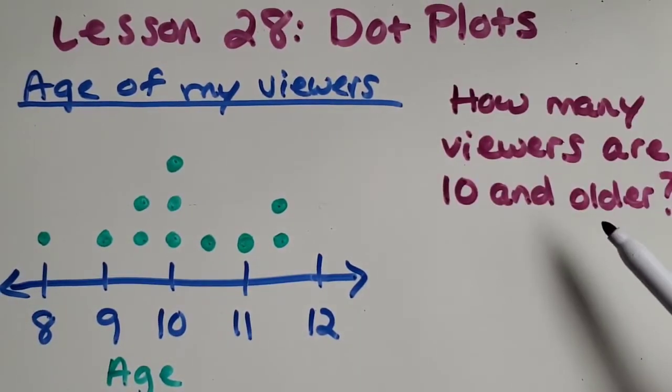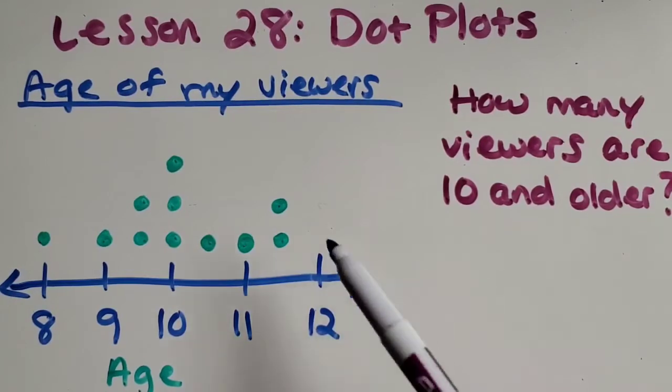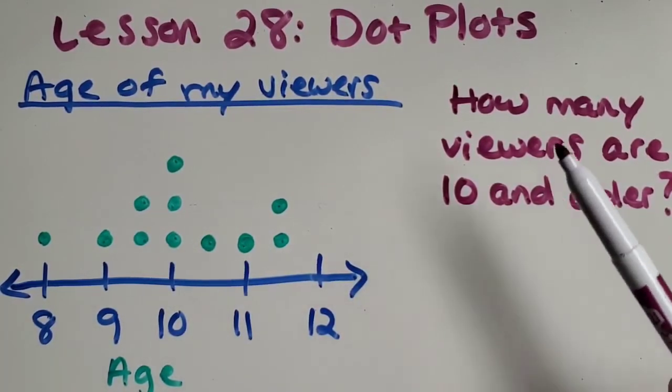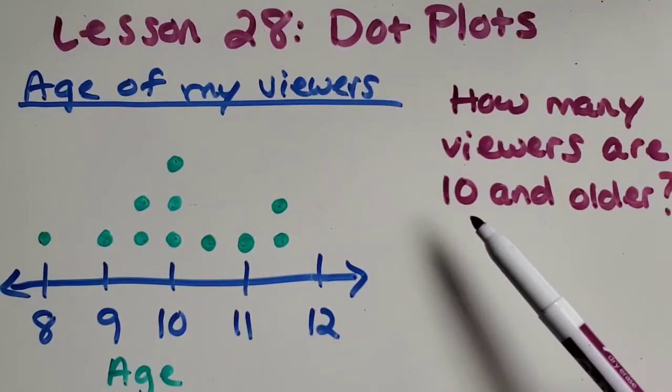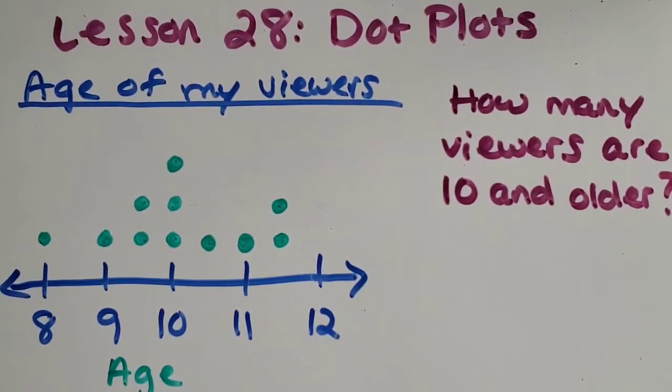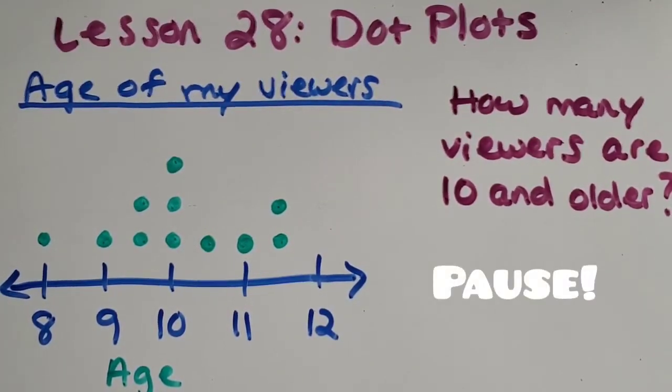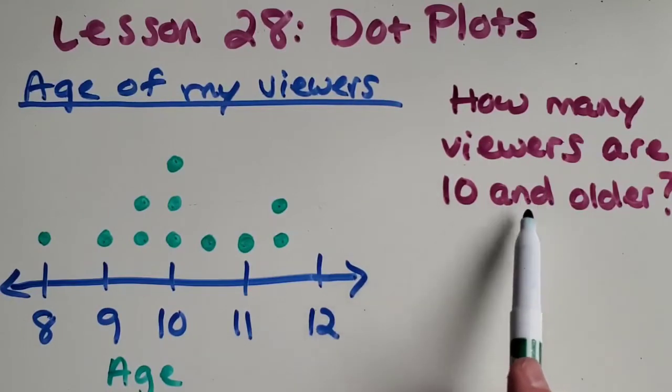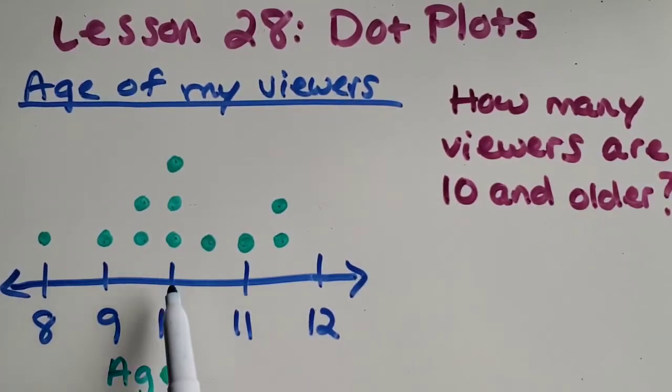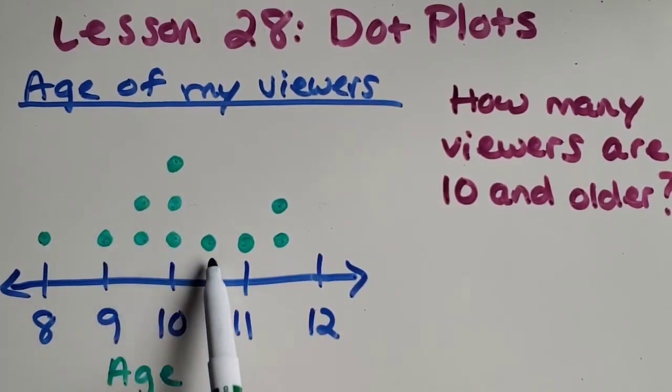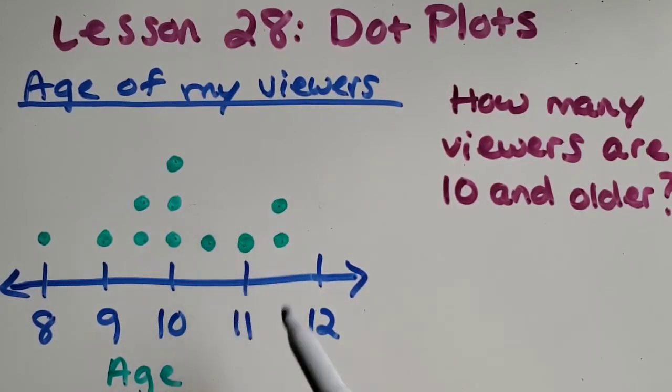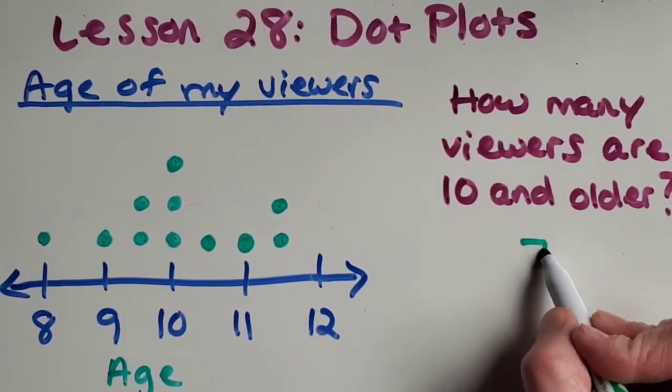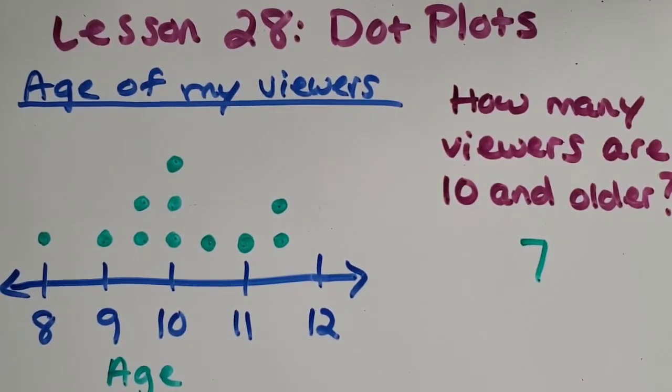Okay, here's the first question for you with this data that we just plotted. So it says how many viewers are 10 and older? Why don't you pause the video and find out? Okay, so in this case, since it included 10, it's 10 and older, I'm going to include these dots above 10. So here's 123. This person's older. So there's four. So are these 567. Seven viewers are 10 and older.